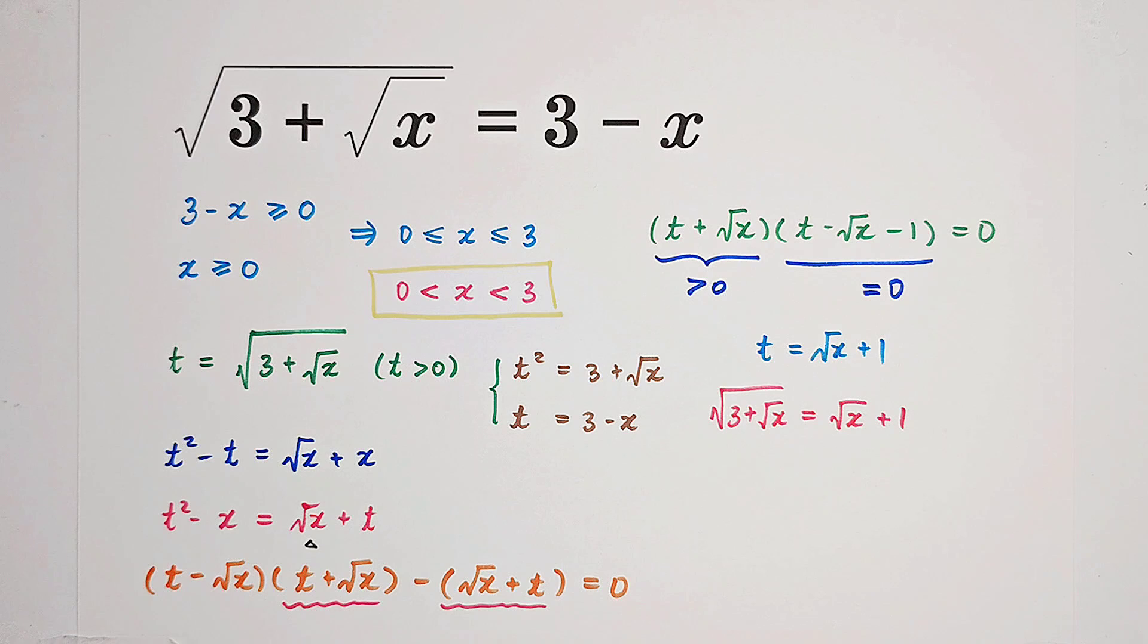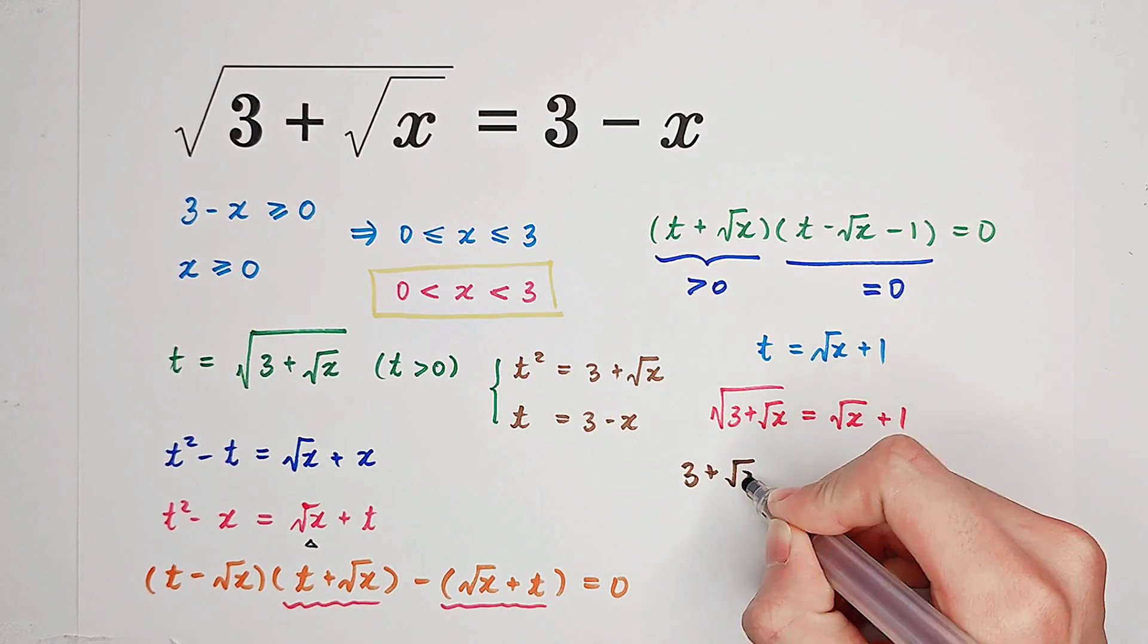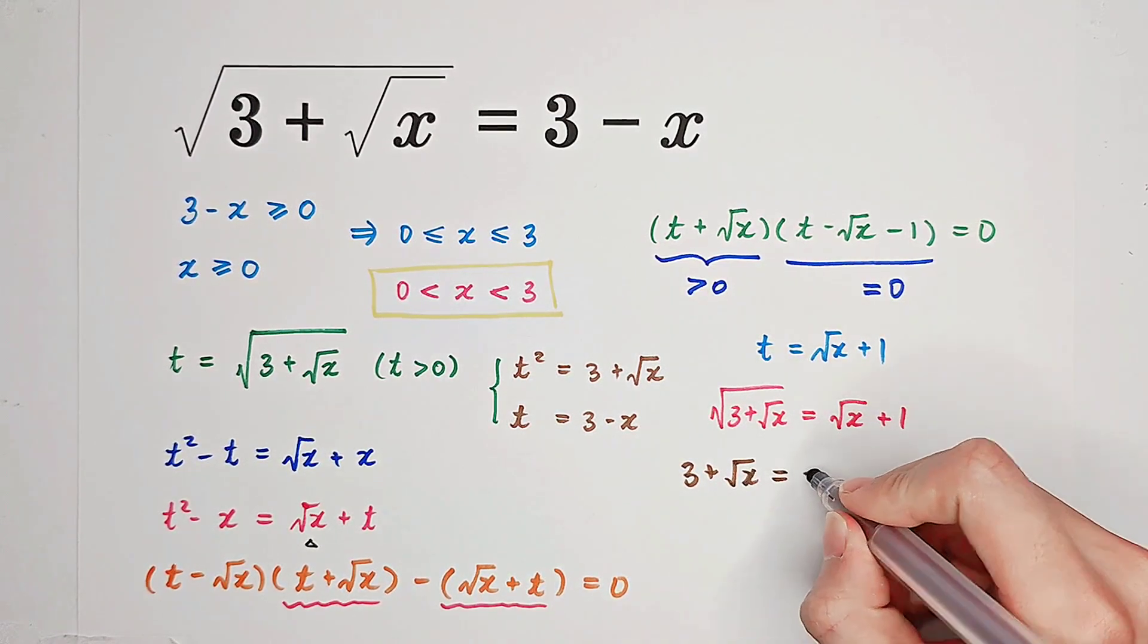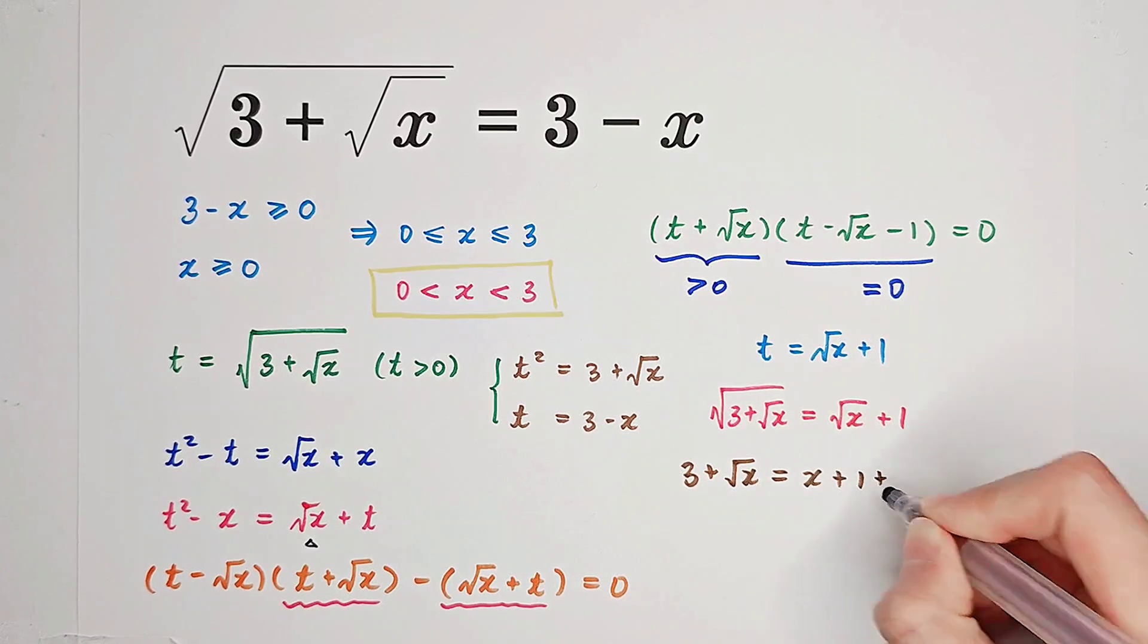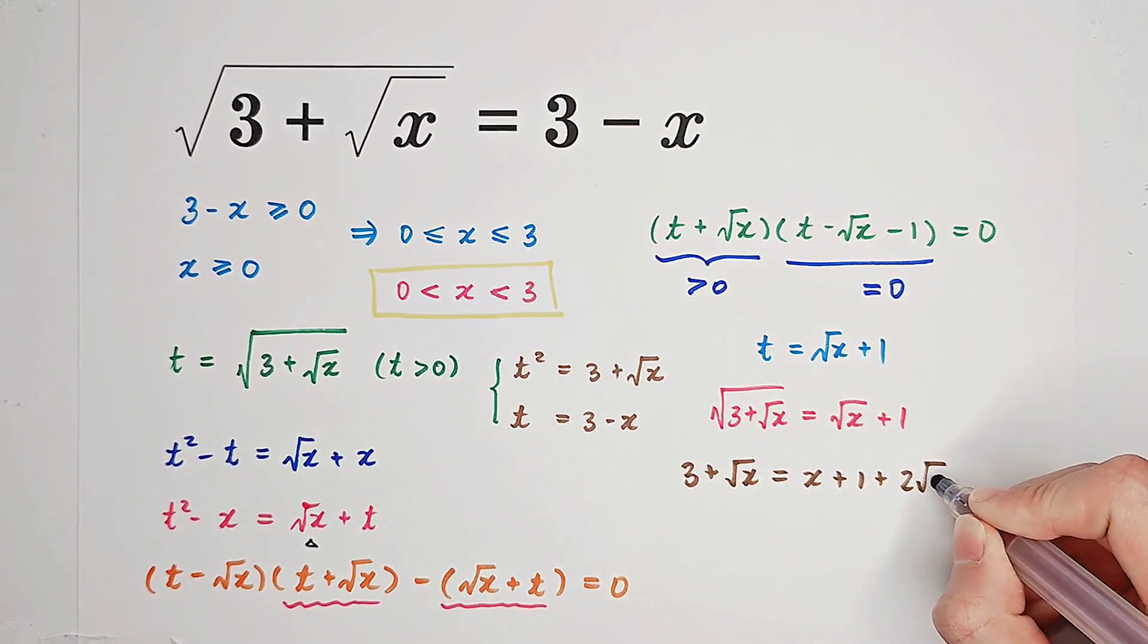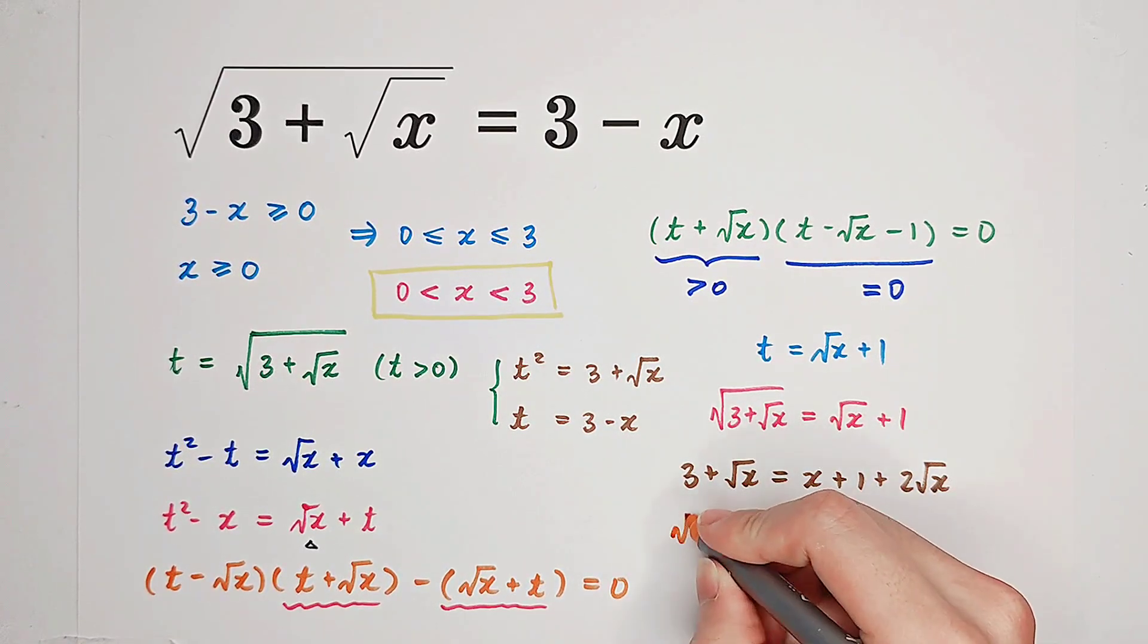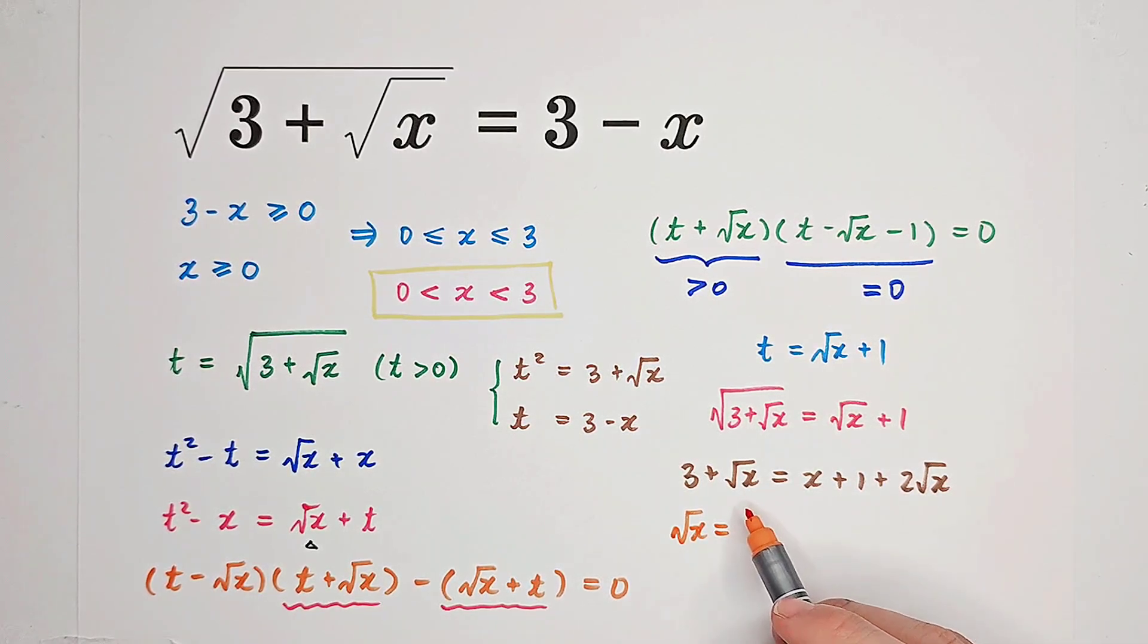Square both sides, we get 3 plus square root of x equals x plus 1 plus 2 times square root of x. Then we get square root of x is actually equal to 2 minus x.